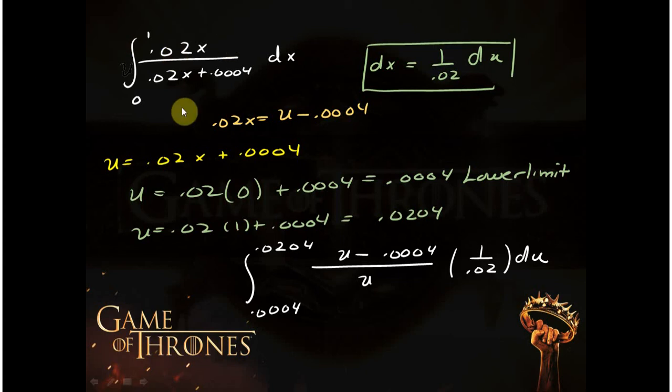So in for the top goes this, u minus 0.0004. In for the bottom goes u. In for the dx goes what I have for dx. It's the same business. It's the same set of steps that I did in dirty detail on the toy problem. Nothing has changed. Lower limit changed. Upper limit changed. So the steps are all the same.